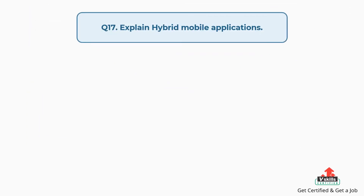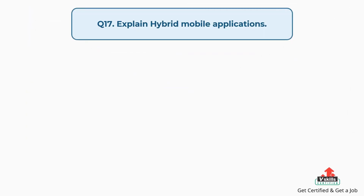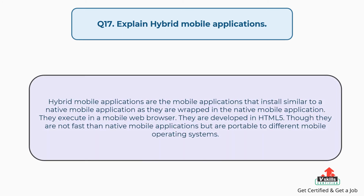Question number 17: Explain hybrid mobile applications. Hybrid mobile applications are mobile applications that install similar to a native mobile application, as they are wrapped in the native mobile application. They execute in a mobile web browser and are developed in HTML5. Though they are not as fast as native mobile applications, they are portable to different mobile operating systems.